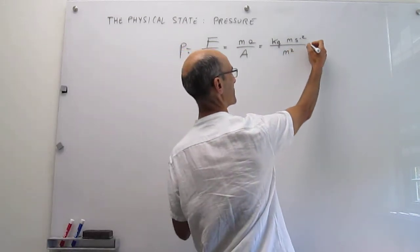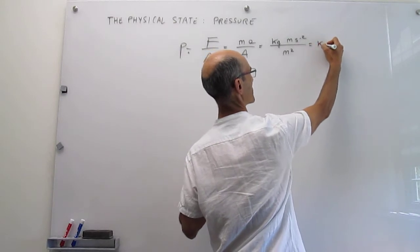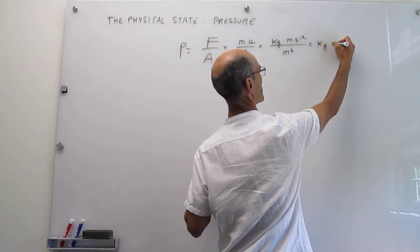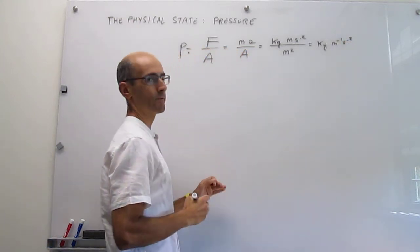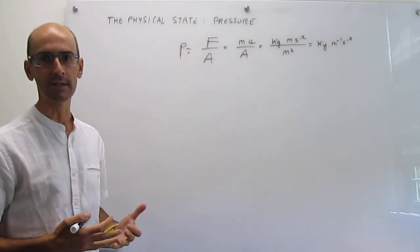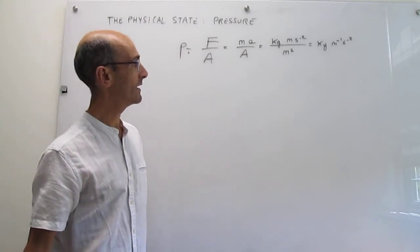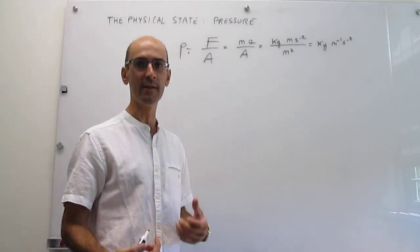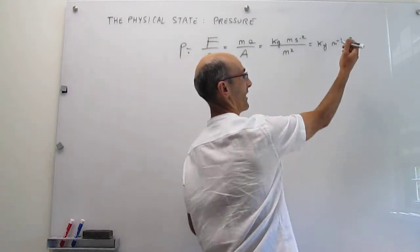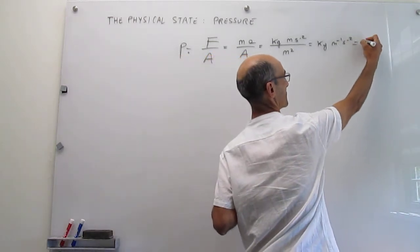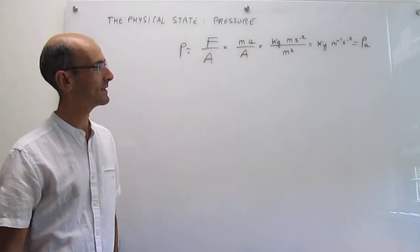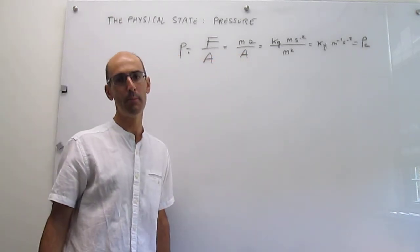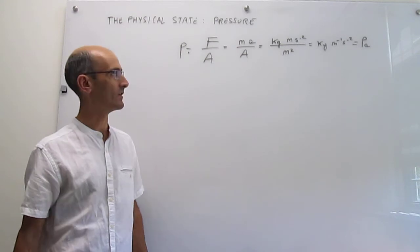When you aggregate all of these units you get kilogram meter to the minus one second to the minus two, and of course those are very unwieldy units to use. Instead, we redefine an SI unit of pressure as simply the Pascal (Pa). So one Pascal is equal to one kilogram per meter per second squared.